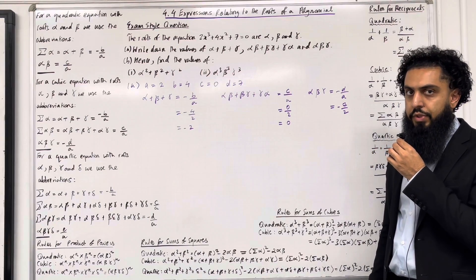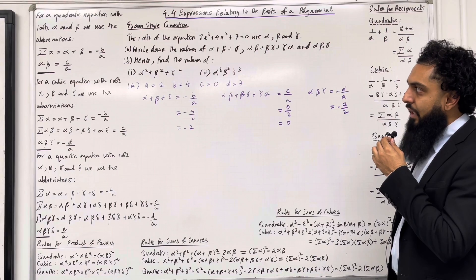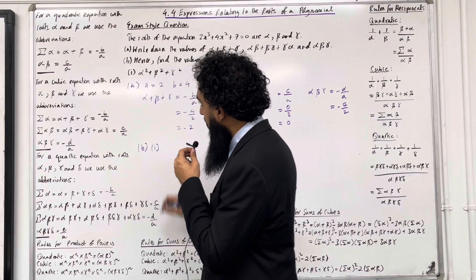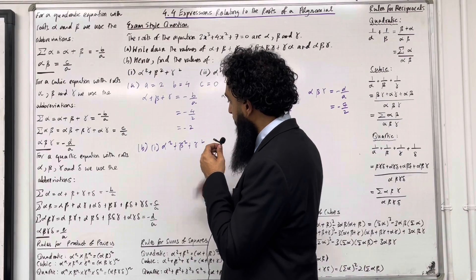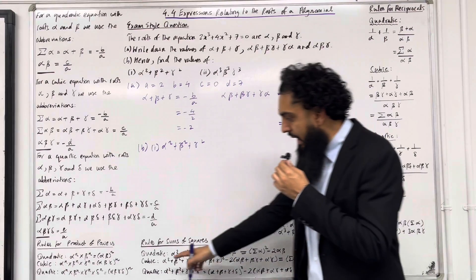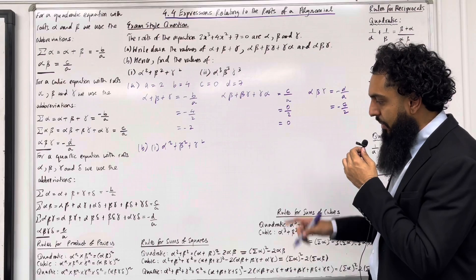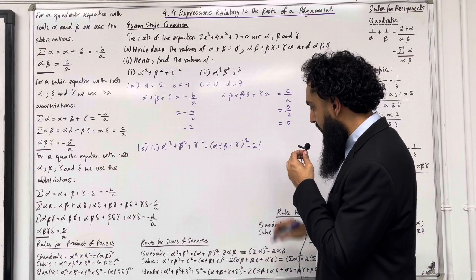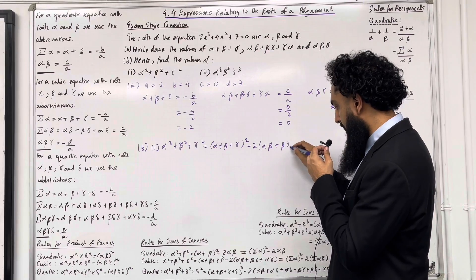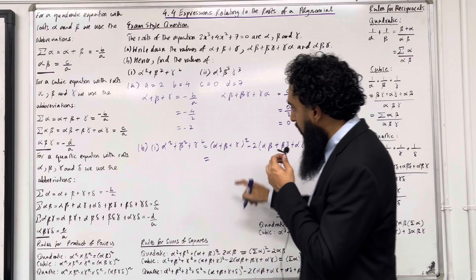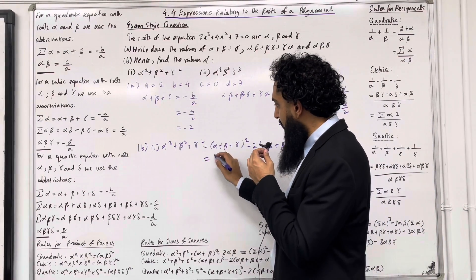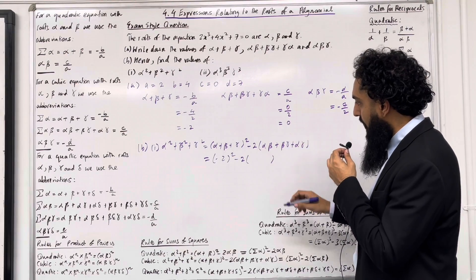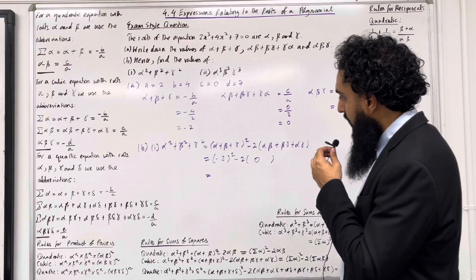This completes part A. Moving on to part B. Part 1: we have alpha squared plus beta squared plus gamma squared. We're looking at the rules for sums of squares for a cubic. Alpha squared plus beta squared plus gamma squared is given by (alpha plus beta plus gamma) squared minus 2 lots of (alpha beta plus beta gamma plus alpha gamma). This is equal to (minus 2) squared minus 2 lots of 0, which is equal to 4.